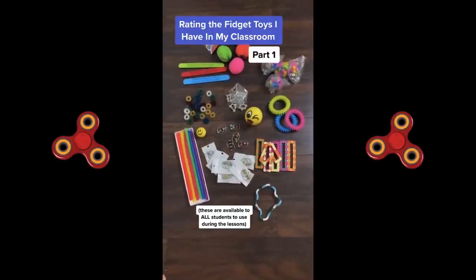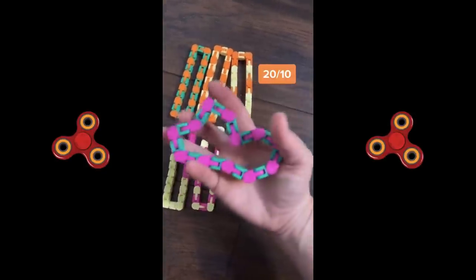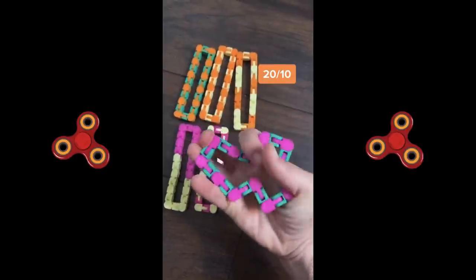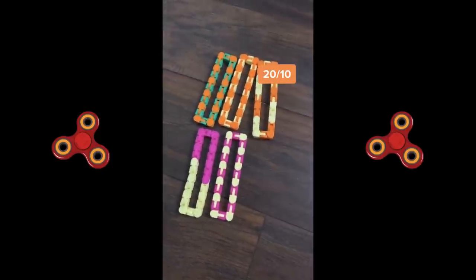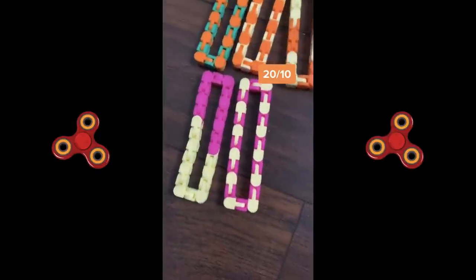Grading the fidget toys I have in my classroom. These are called Racky Tracks and they're really durable. They last for years. You can create a lot of different shapes with them and they come apart so you can create unique color combinations.